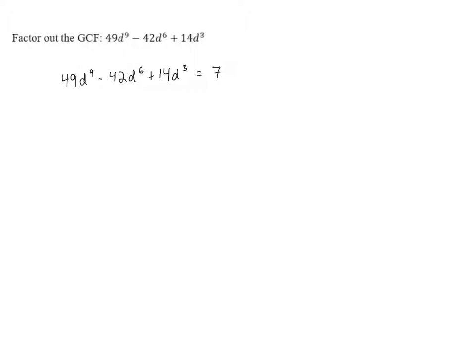Now we have to look at the variable parts. We've got a d to the 9th, a d to the 6th, and a d cubed. All of those contain powers of d, and the largest power of d that's contained in all of them is d cubed. All three of those are divisible by d cubed, so d cubed will be a part of the greatest common factor.